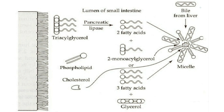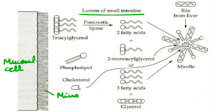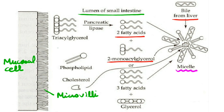This is the diagrammatic representation showing the lumen of the small intestine. This one is the mucosal cell of the small intestine and this is the microvilli of the mucosal cell. As shown in this diagram, the lumen of the small intestine contains fatty acids and monoglycerides. These being insoluble in water cannot be absorbed inside the mucosal cell. Therefore, they combine with bile salts from the liver to form mixed micelles so that they can be taken up inside the mucosal cell.